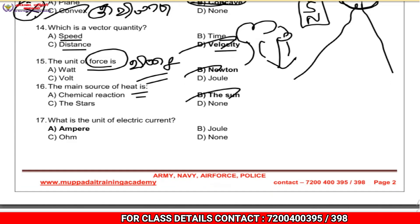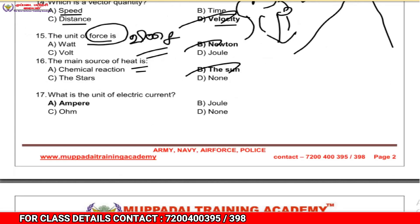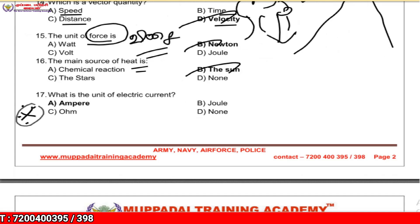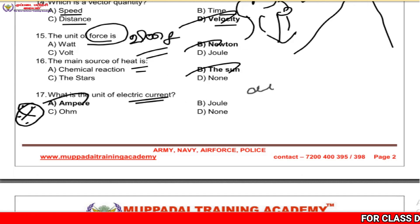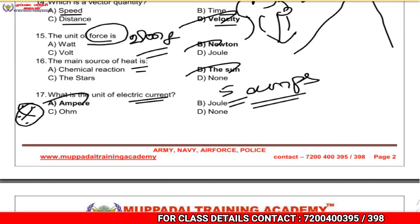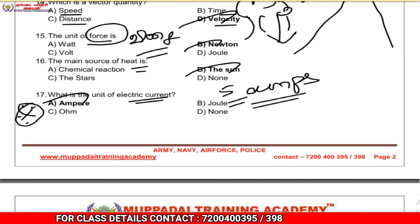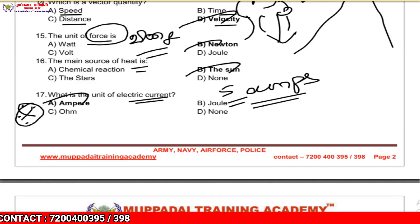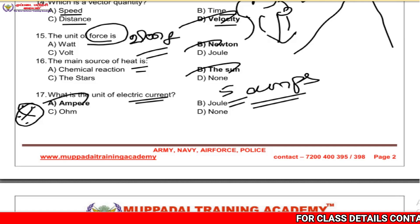What is the unit of electric current? The unit of electric current is the ampere. Ampere is the current unit. Voltage or electromotive force is measured in volts.